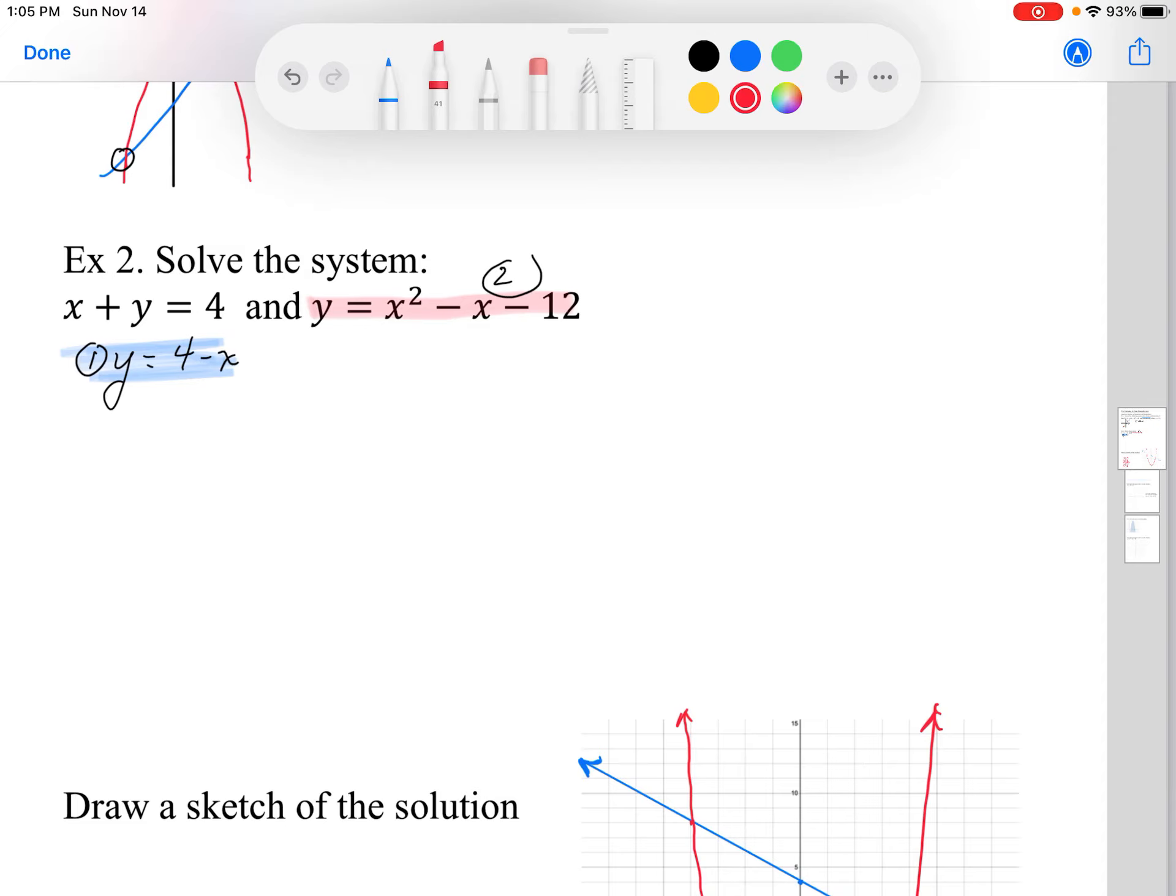So once we've made these equal to y, what I can do is substitution. I can either substitute or eliminate to solve a system. In this case I'm just going to make equation 1 equal to equation 2. So equation 1 is 4 minus x, and I'm going to make that equal to x squared minus x minus 12. I've made them both equal to y and substituted. My system of equations has eliminated the y variable. So now I can solve this for x.